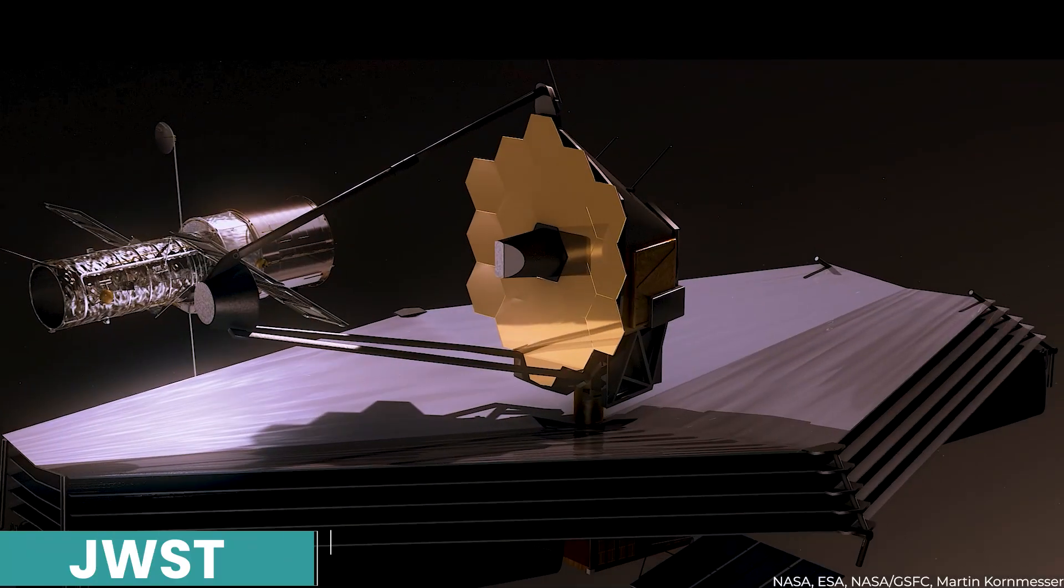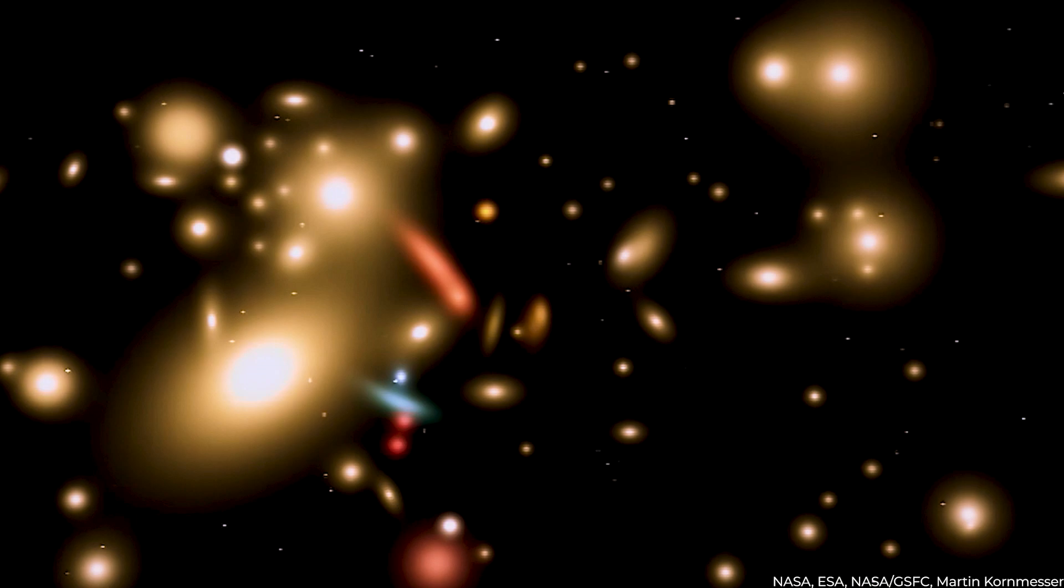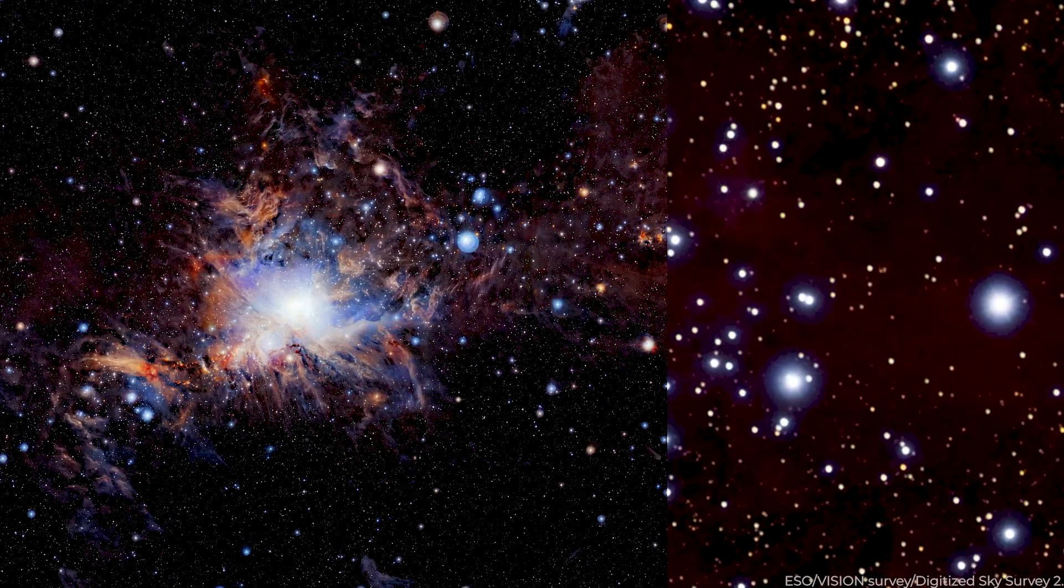The JWST is a space observatory and successor to the Hubble Space Telescope. Its main goals are to explore the cosmos in the infrared region of the electromagnetic spectrum, enabling it to see through dust clouds and distant objects with amazing clarity. It's designed to examine various scientific problems such as galaxy creation, star formation, the hunt for habitable planets, and the beginning of life.